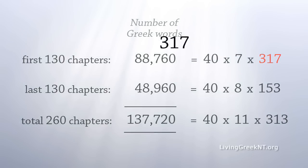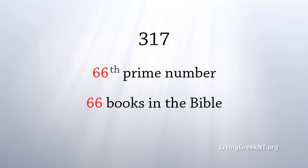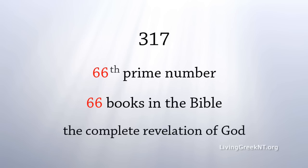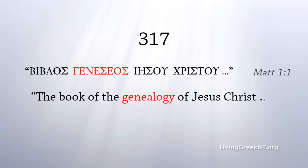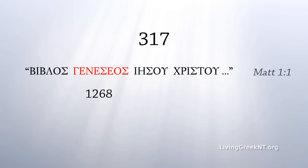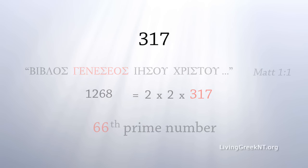This number: 317. 317 is the 66th prime number. There are 66 books in the Bible, Old and New Testament, presenting the complete revelation of God. In the first verse of the New Testament, Matthew 1:1, the second word is Genesios — 'the book of the genealogy of Jesus Christ.' Genesios has a numeric value of 1268, which is 2 times 2 times 317. And 317 is the 66th prime number. Even if it is not immediately apparent when we see the number 317, something important is being highlighted.